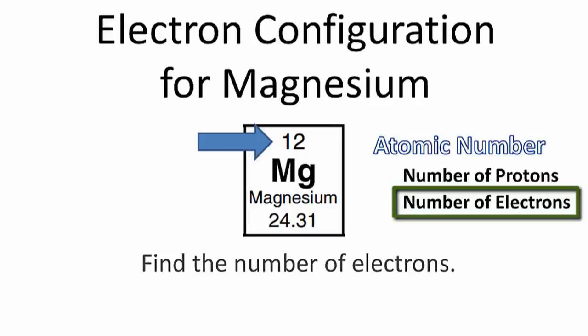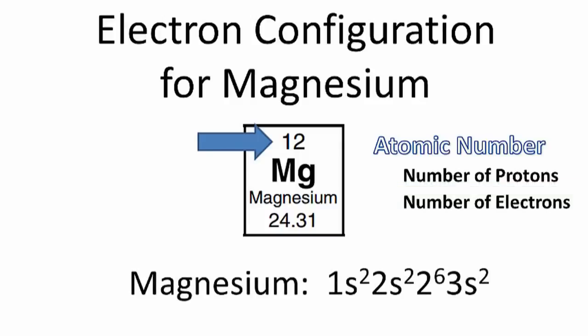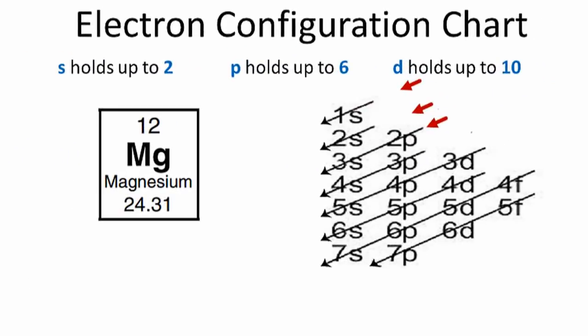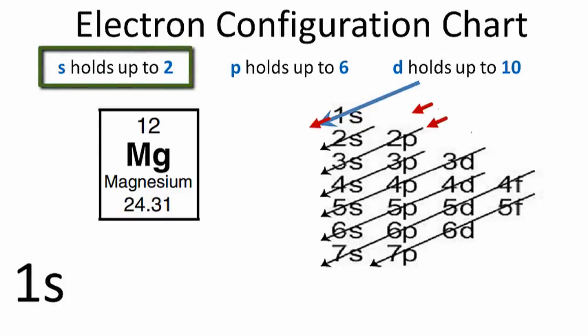Once we have the number of electrons, we can write the electron configuration for magnesium. We'll use the chart on the right to draw the electron configuration notation. So we have 12 electrons for magnesium. We'll start in the first row, and as we go down, we can see our first term is 1s. The 1s orbital can hold up to two electrons, so we'll put a 2 after the 1s.